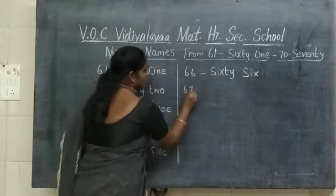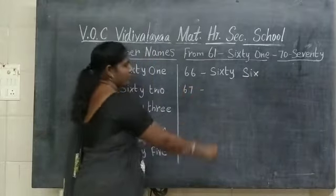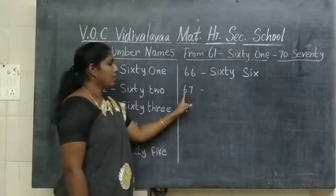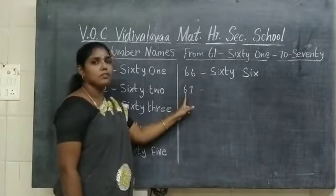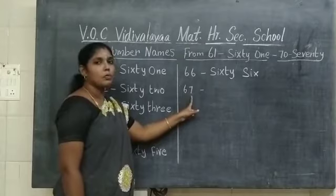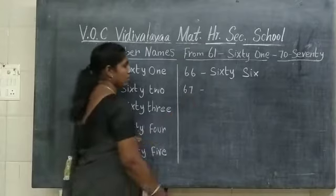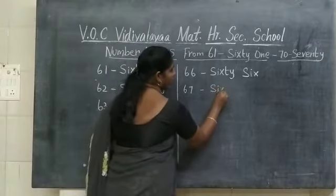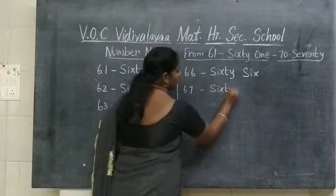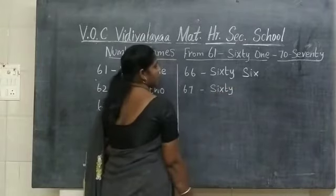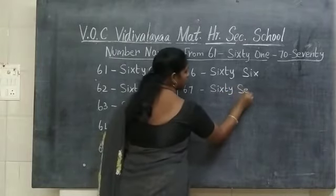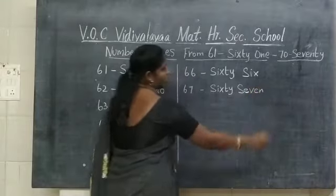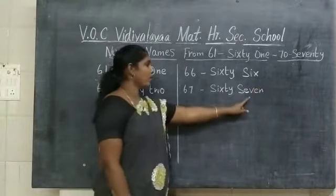6, 7 — 67. What number is this? 67. What is the spelling of number 67? S-I-X-T-Y S-E-V-E-N. 67.